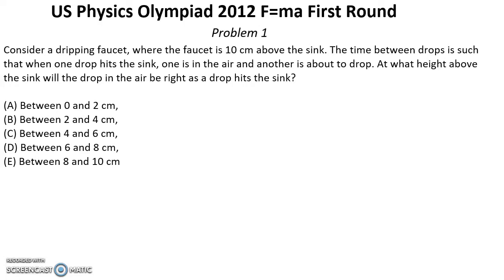US Physics Olympiad year 2012, F=ma first round solutions. Problem 1: Consider a dripping faucet where the faucet is 10 centimeters above the sink. The time between drops is such that when one drop hits the sink, one is in the air and another is about to drop. At what height above the sink will the drop in the air be right as a drop hits the sink?